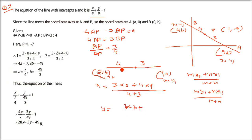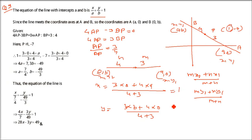For y: m = 3, n = 4, so it is (3×b + 4×0) / (3 + 4) = 3b/7. Now the x-point is 1 and the y-point is -7. So 4a/7 = 1, giving a = 7/4. And 3b/7 = -7, so b = -49/3.